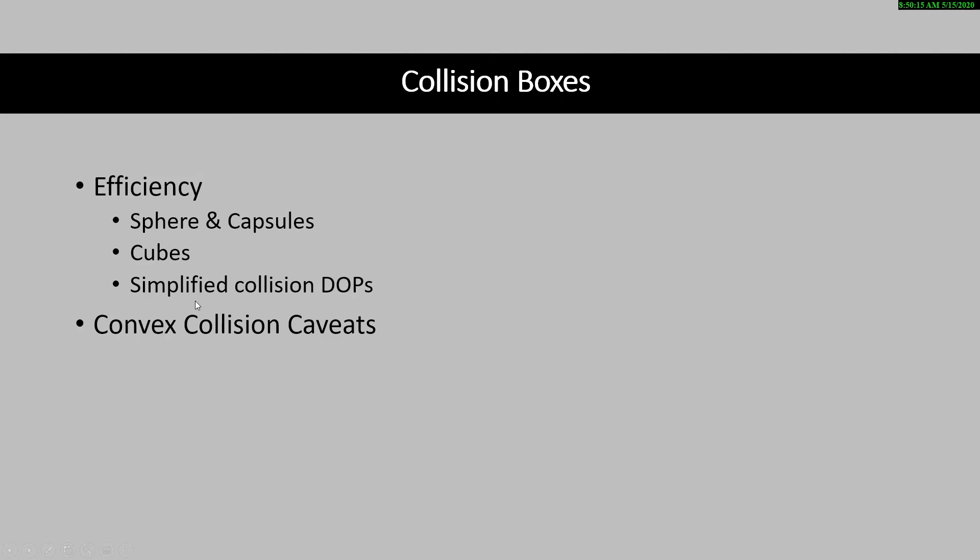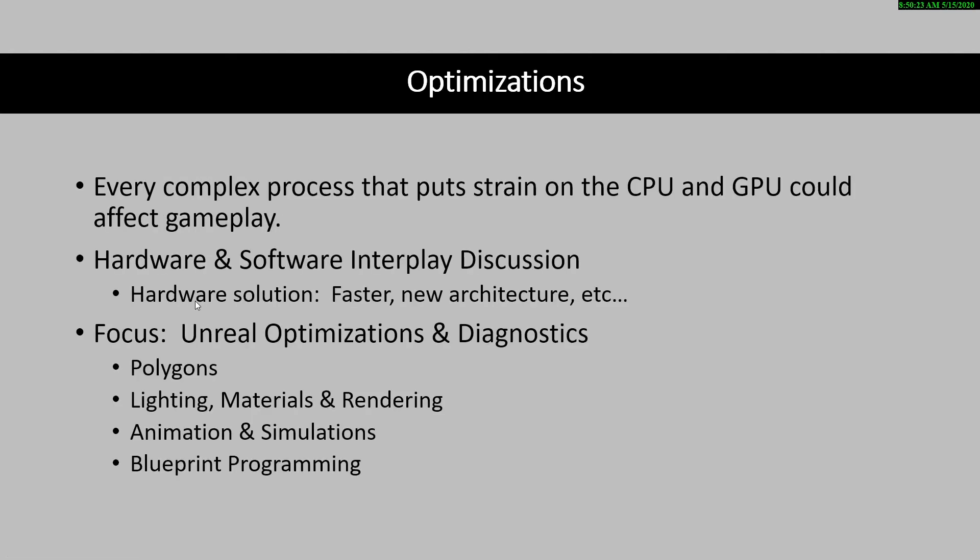Finally, we are going to move on to optimizations. In the optimization section, we're mainly going to give an introduction to some of the tools that we will cover later in additional courses, where we will start to identify complex processes that could affect your visualizations or gameplay. We'll talk about the difference in hardware and software and the interplay between those two. We're going to focus a lot on diagnostics as well as optimizations, because this is a core toolset to understand and get good at. Optimizations will exist in all areas we cover — polycounts, lighting, materials, rendering, animations and simulations, as well as blueprint programming. That's a great overview of where we're going to go with this chapter. Let's jump in and get started.